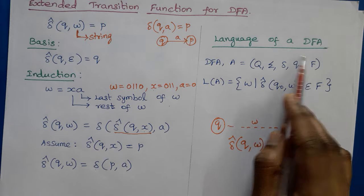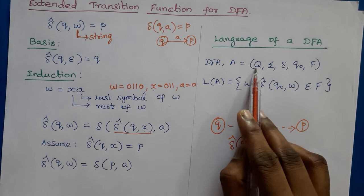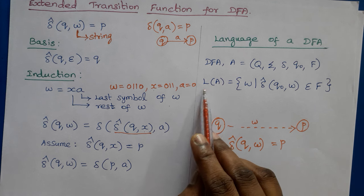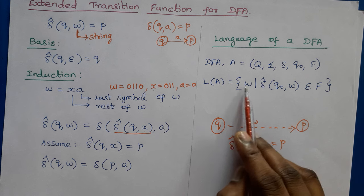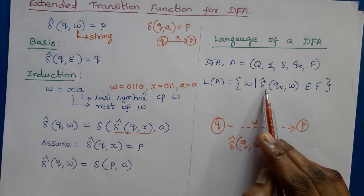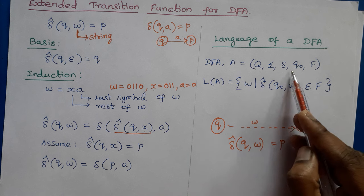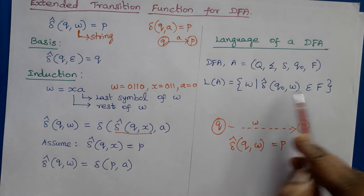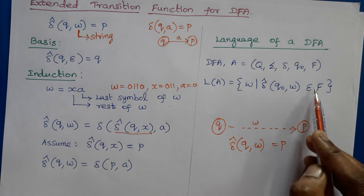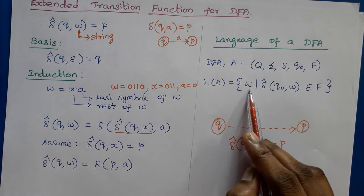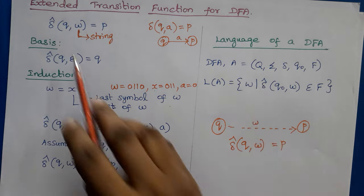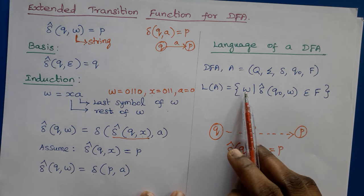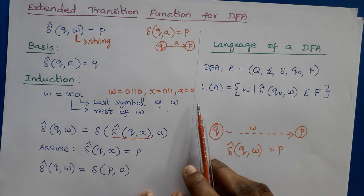Now we need to know about the language of a DFA. If DFA A = (Q, sigma, delta, Q0, F), then the language of DFA A is represented as L(A). L(A) is the set of strings W such that delta-cap(Q0, W) belongs to the final state set F. If delta-cap(Q0, W) reaches a final state, then W is accepted by L(A); otherwise it is rejected.